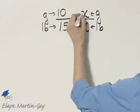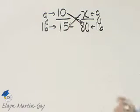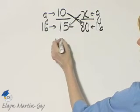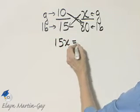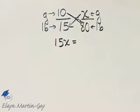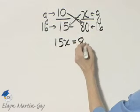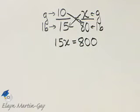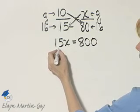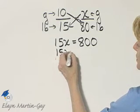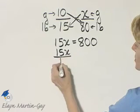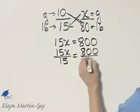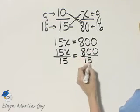Let's solve this by cross-multiplying. I have 15X is equal to 10 times 80, that would be 800. And let's solve this now for X. To do so, I'll divide both sides by the coefficient of X, which is 15 — left side by 15, right side by 15.